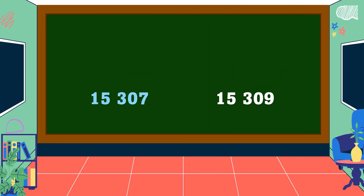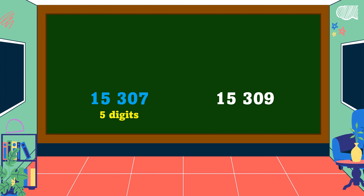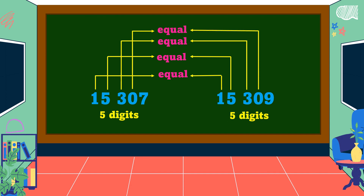Another example: the first number has five digits and the second number also has five digits. We compare from the highest place value: one and one are equal, five and five are equal, three and three are equal, zero and zero are equal. Then seven and nine — seven is less than nine. Therefore, the relation symbol is less than, and 15,307 is less than 15,309.